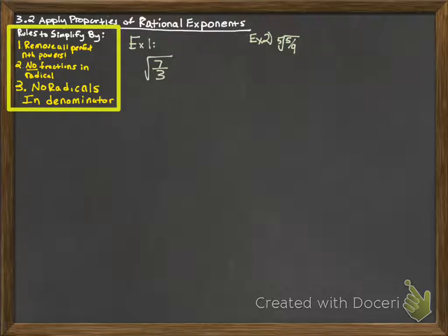When we talked about square roots, we removed all perfect squares. Now that we're talking about nth roots and so on, we'll be removing any nth powers. Secondly, no fractions in the radical whatsoever, and that's kind of what we're going to look at in this video. And then thirdly, we should have no radicals in the denominator.